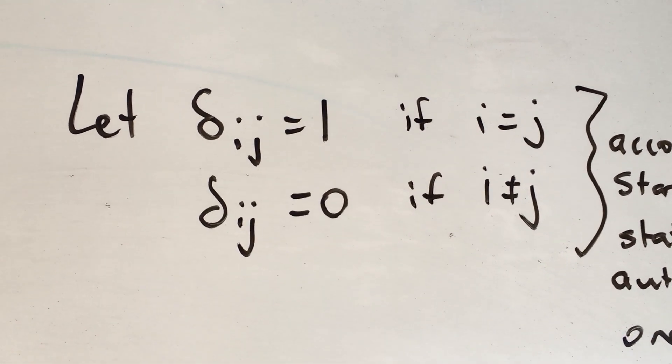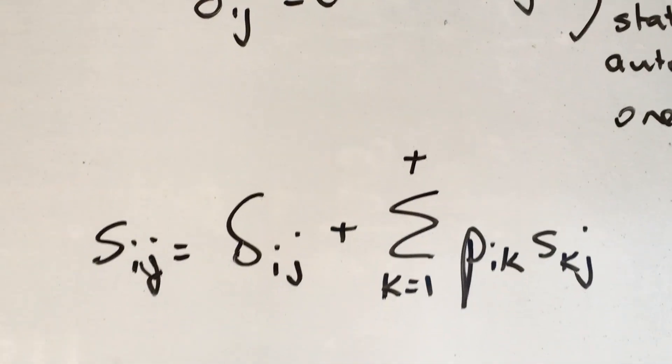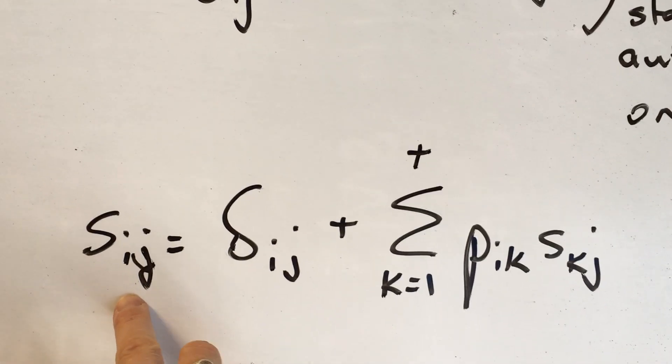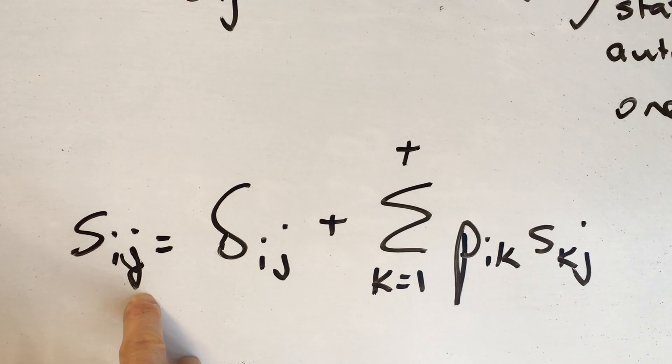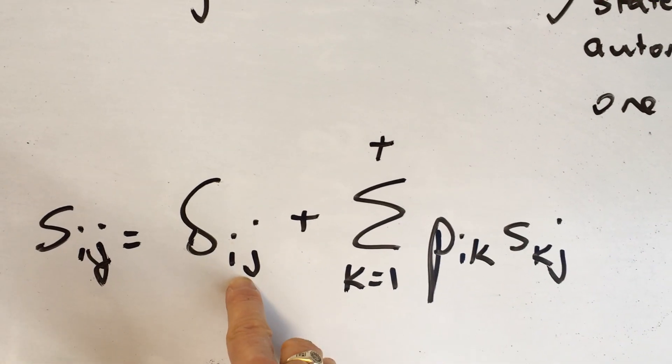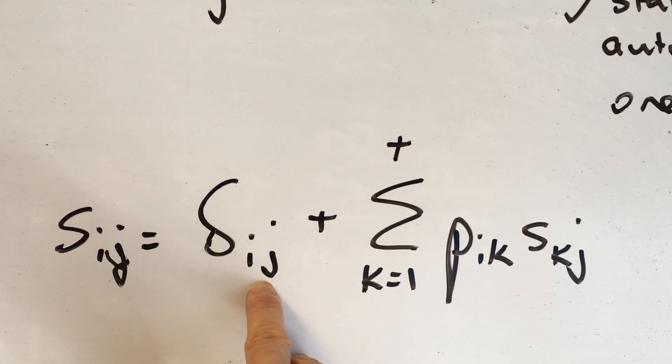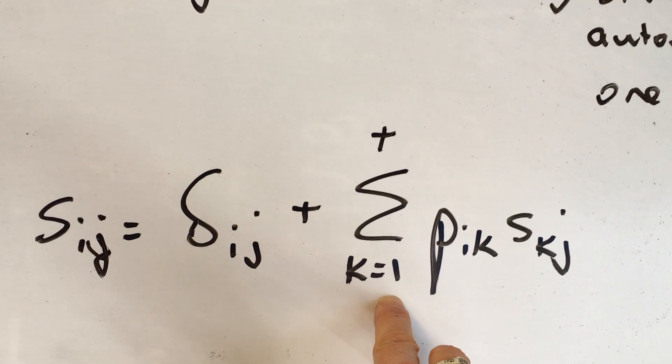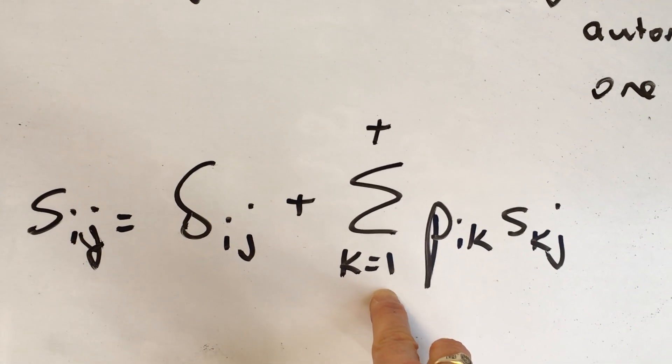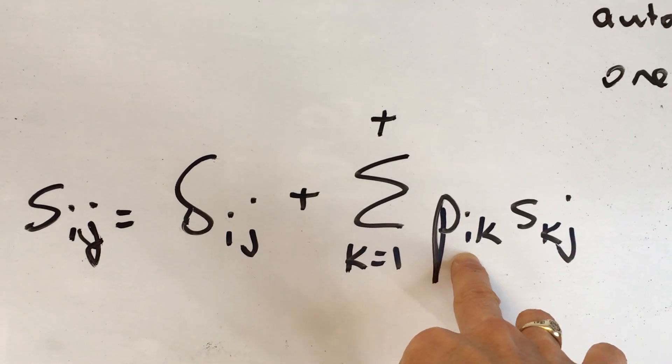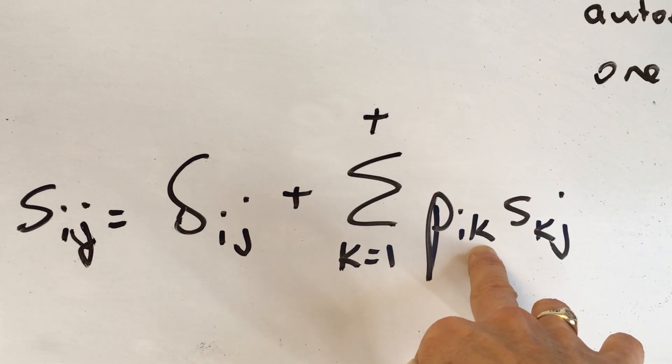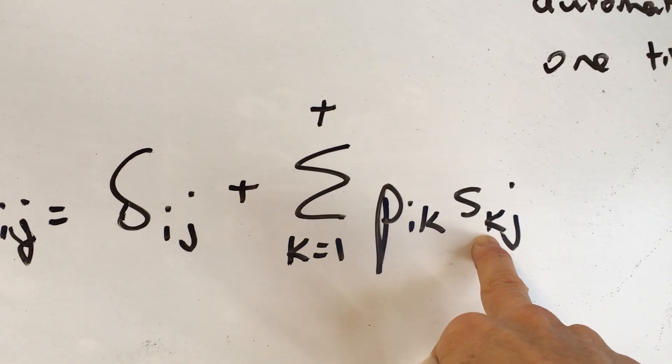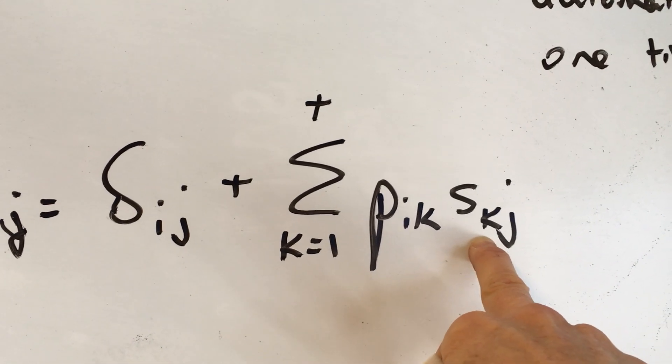All right. Now, given S and IJ and delta IJ, now we're going to define this equation. So we're going to say S IJ, so the expected number of time periods we spend in state J, given that we started in I, is going to be delta IJ. So that's kind of our magic one for if I and J are the same, that's the same state, plus the sum over the transient states only of the probability of going from starting state I to intermediate state K times the expected number of time periods spent in state J, given that you start in state K.